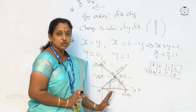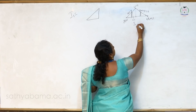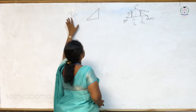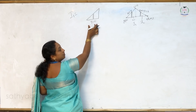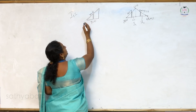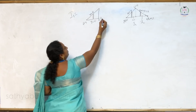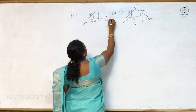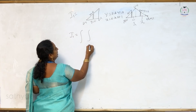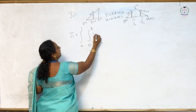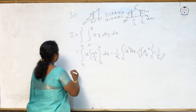We divide the region into I1 and I2. For I1, consider the strip parallel to the y axis. y ranges from y equal to 0 to y equal to x, and x ranges from 0 to 1. Therefore I1 is the double integral from 0 to x (inner) and 0 to 1 (outer) of xy dy dx. This reduces to I1 equal to 1 by 8.